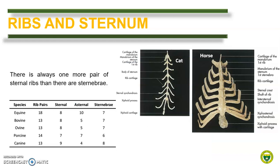In general, the sternum of herbivores like horses is flat and wide, while it is cylindrical in carnivores like cats. It is also important to remember the relationship between the number of rib pairs and the number of sternibrae. Here is a table showing the comparative number of rib pairs, sternal and asternal ribs, as well as the sternibrae. The number of rib pairs corresponds to the number of thoracic vertebrae. For example, horse has 18 thoracic vertebrae, thus they have a total of 18 rib pairs. Please remember that there is always one more pair of sternal ribs than there are sternibrae. As in horse, there are 8 sternal ribs, thus they have 7 sternibrae. This arrangement is true for most domestic animals.